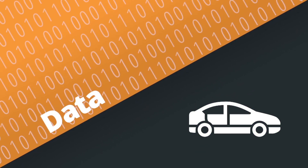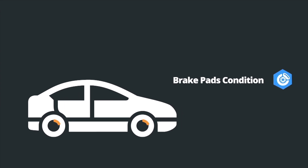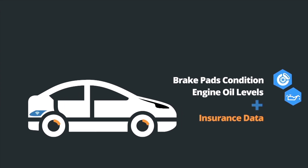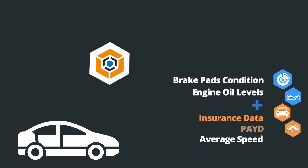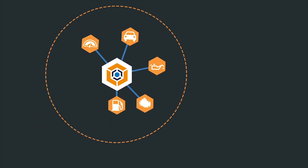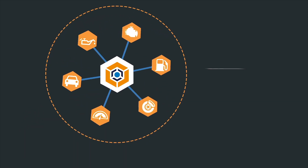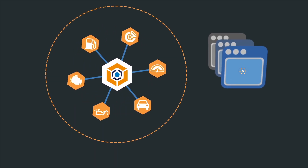Let's start to create some data. Telemetry information such as the condition of the brake pads or engine oil levels combine with insurance data coming out of a pay-as-you-drive insurance module — for example, average speed readings — to form a data payload that will be transmitted onto the IoT network for consumption by downstream applications.